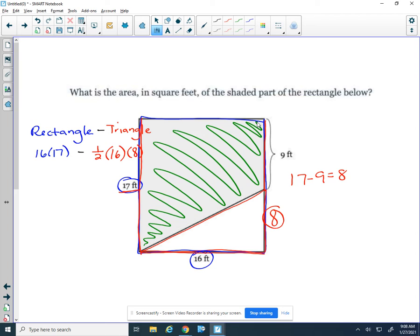So 16 times 17 equals 272. And then we're subtracting one half of 16 times 8, which is 64. So my final answer when I subtract those two is 208 feet squared.